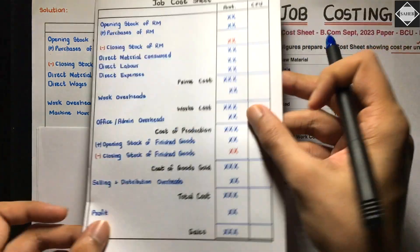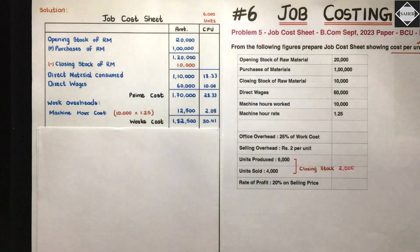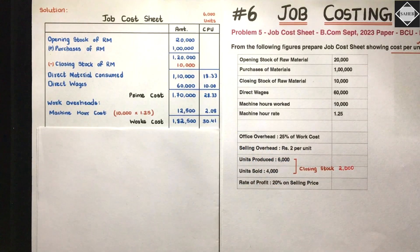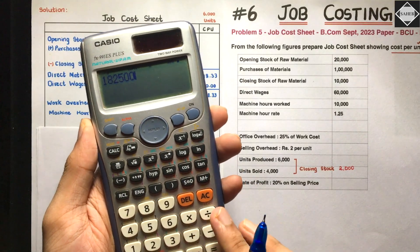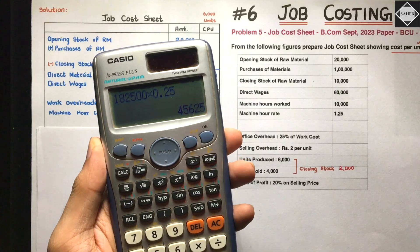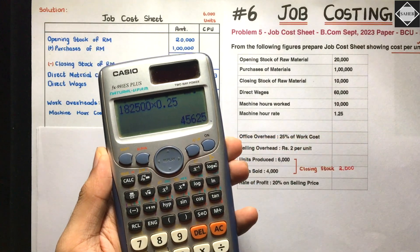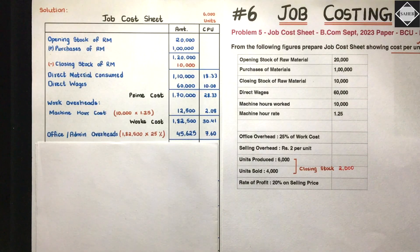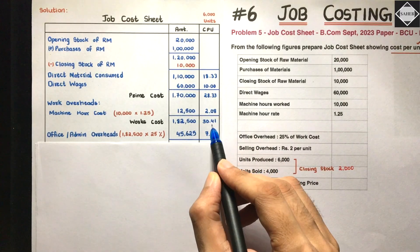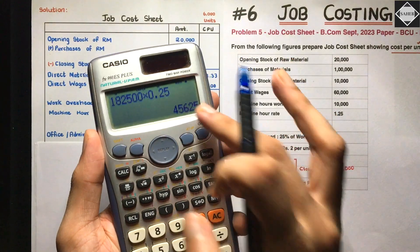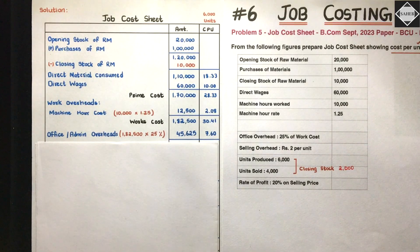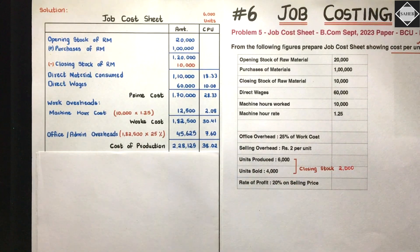After works cost, we take office or admin overheads. The question says office overhead is 25% of works cost. Our works cost is 1,82,500, so 1,82,500 into 0.25 equals 45,625. CPU for works cost is 1,82,500 divided by 6000 equals 30.41. CPU for office overhead is 45,625 divided by 6000 equals 7.60. After adding office or admin overheads we get cost of production.